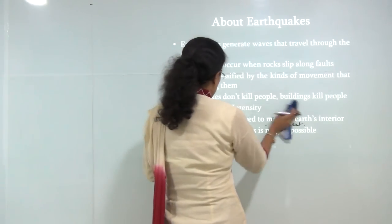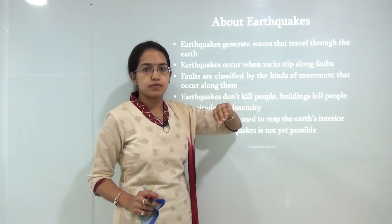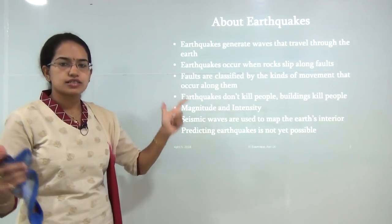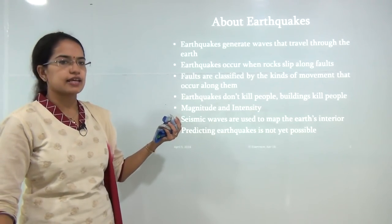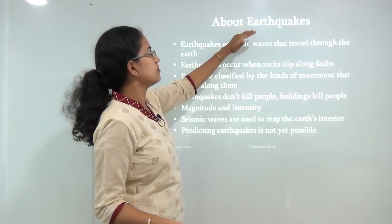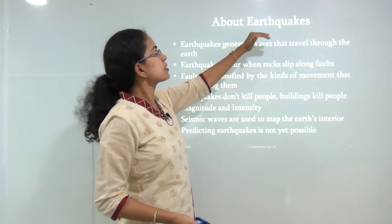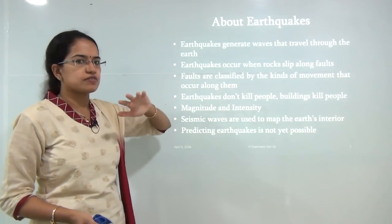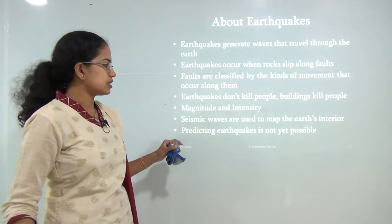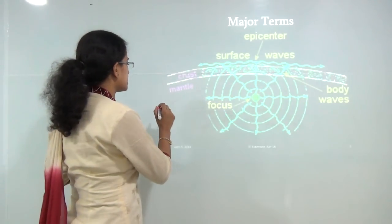It's not earthquakes that kill people — it's the buildings that kill people. Earthquakes affect the surroundings and the landscape, and the destruction of the landscape leads to the killing of people. We would also be studying the magnitude and intensity of earthquakes, the various kinds of waves that occur, the major regions where earthquakes are concentrated, and how to predict earthquakes. Now let's understand some basic terms.